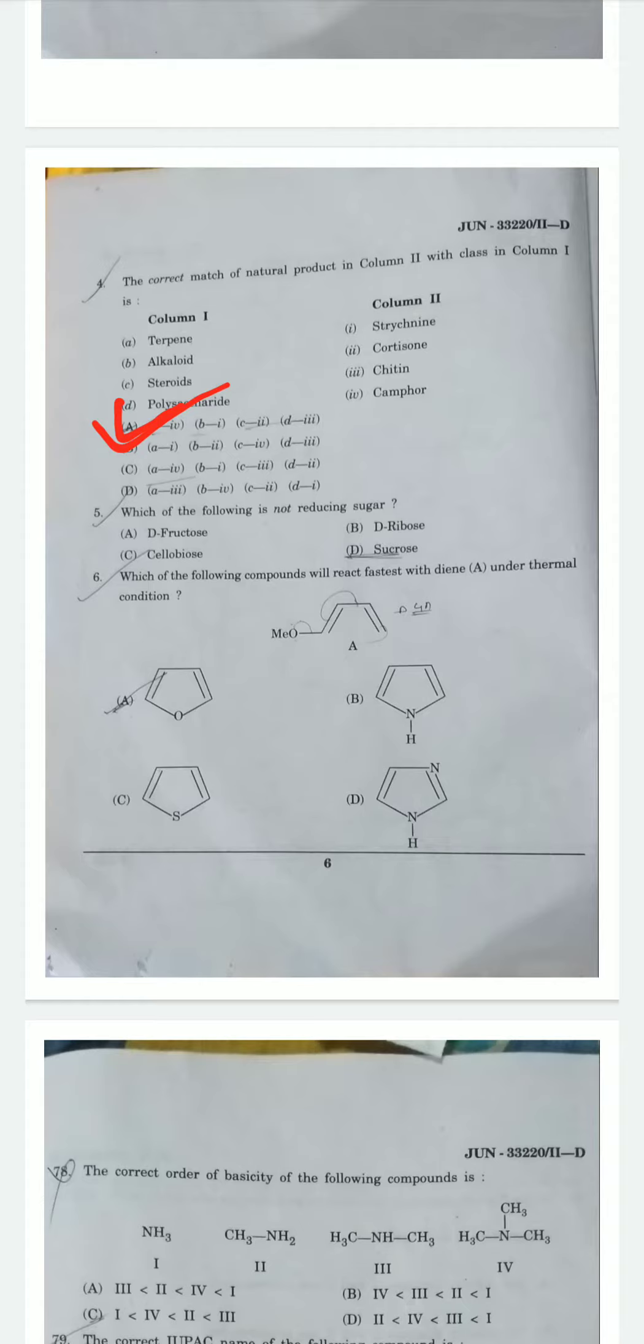Question 4: Which of the following is not a reducing sugar? Options are D-fructose, D-ribose, cellubiose, and sucrose. The correct one is sucrose because sucrose is not a reducing sugar. The glycosidic bond between alpha-D-glucopyranoside and beta-D-fructofuranoside has made sucrose a non-reducing sugar. Therefore option D is correct.